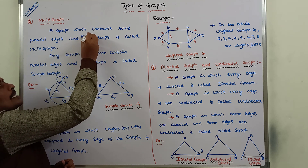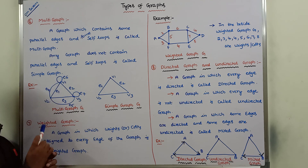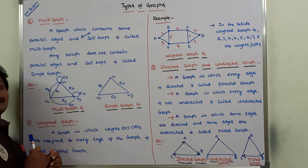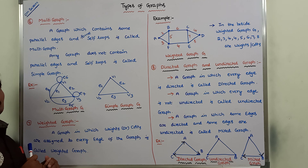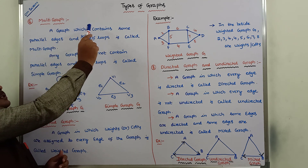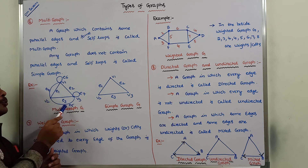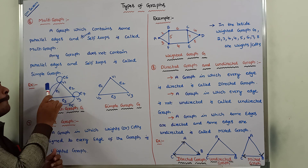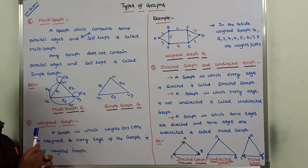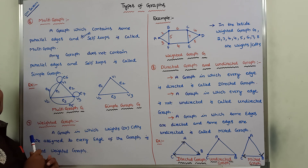This graph is called as a multi-graph because it contains some parallel edges and some self-loops. At vertex V1, a self-loop is there. At vertex V3, a self-loop is there. But vertex V2 has no self-loop. A graph which contains some parallel edges and some self-loops is called as multi-graph.